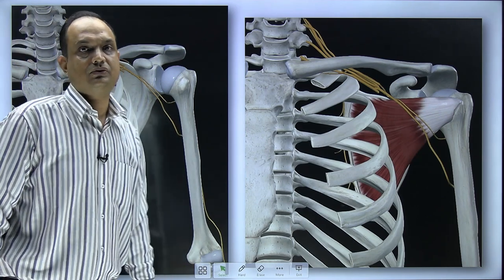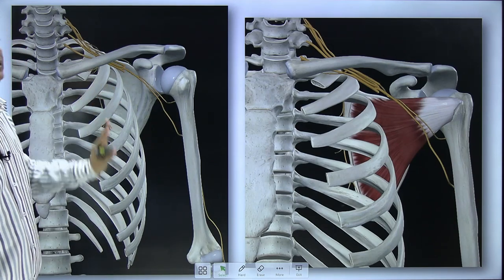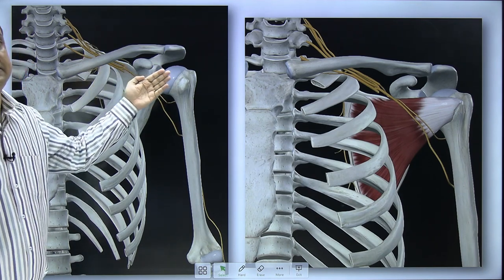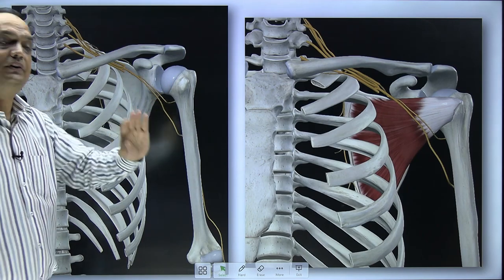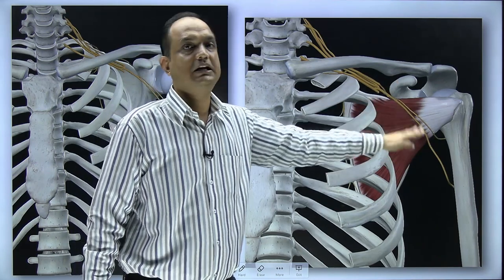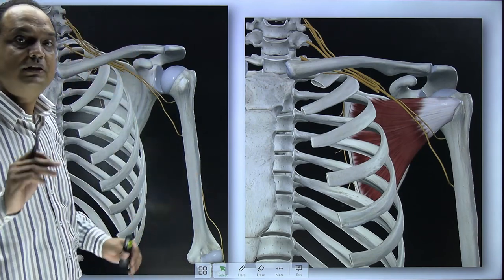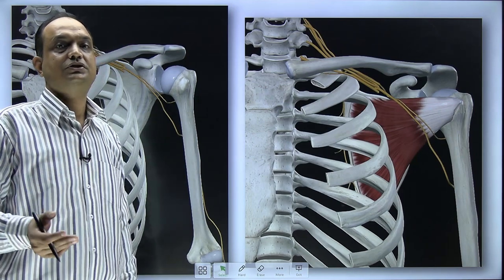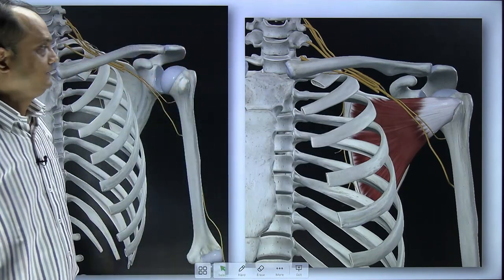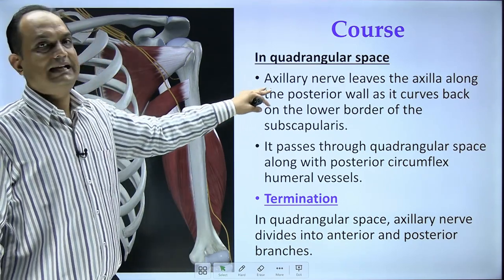The subscapularis arises from the scapula going toward the humerus, and the branches of the posterior cord are anterior to it. An important concept is that these structures lie superficial to the subscapularis — the subscapularis forms the bed for the branches arising from the brachial plexus. So the answer to which structure forms the bed for the posterior cord structures is: subscapularis.